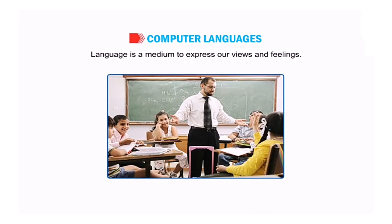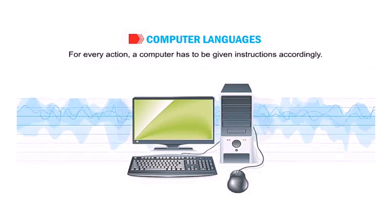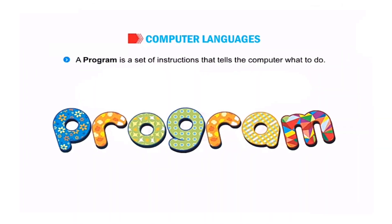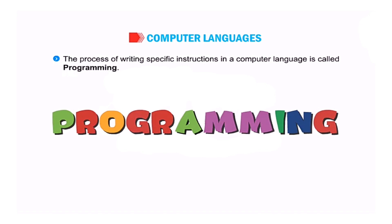As humans, when we wish to express our views and feelings to someone else, we use language as a medium. In similar fashion, when we need to communicate with the computer, we need a language that a computer understands. For everything that we want the computer to do, we need to give it instructions — it does nothing on its own. A program is just a set of instructions that tell the computer what to do. The process of writing specific instructions in a computer language is called programming.